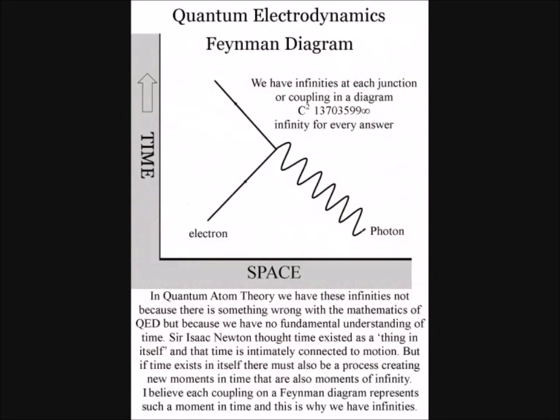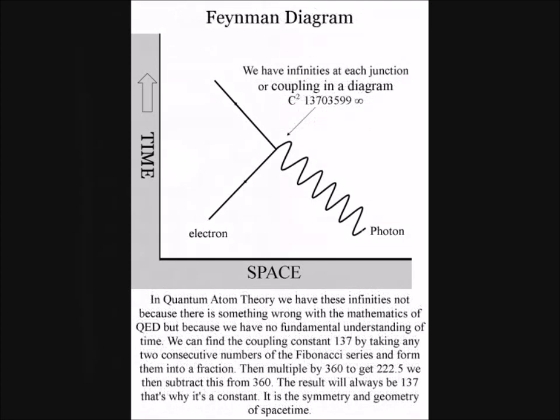Richard Feynman, in one of his physics lectures, said that every theoretical physicist is trying to find a reason for the fine structure constant. The fine structure constant or the coupling constant is an irrational number that never ends and continues into infinity.